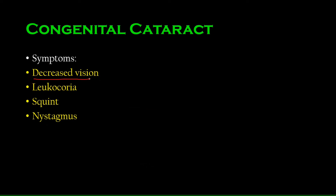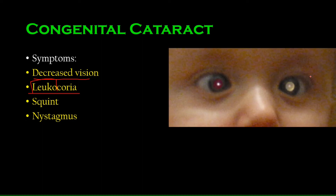Symptoms of congenital cataract: decreased vision due to lens opacity. Then there is leukocoria — 'leuko' means white. Leukocoria is a condition where, when you shine a light on someone's eyes, the opaque lens reflects the light back, producing a white appearance in the eye, as seen in the image shown.